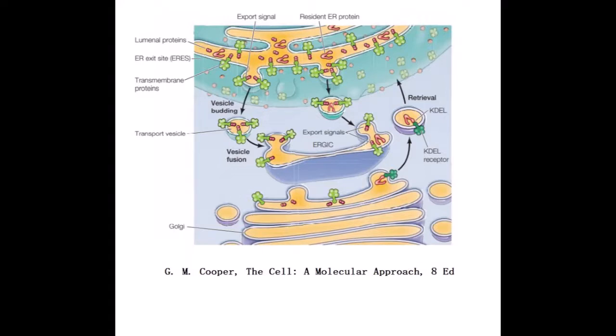These vesicles bud from endoplasmic reticulum exit sites. Coat proteins fuse to form the vesicles and tubules of the ER-Golgi intermediate compartment, or ERGIC, and then carry to the Golgi.